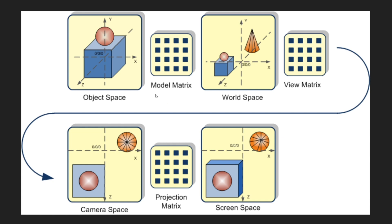For example, whenever you play Minecraft, if you ever press F3 on Windows, you have your coordinate system with your X, Y, and Z. That is what your world space is essentially — your actual space in relation to the world. Then we apply a view matrix to this, and this basically translates all of this into what is actually in your camera space.